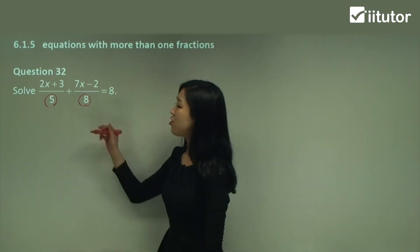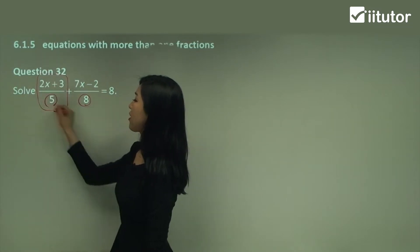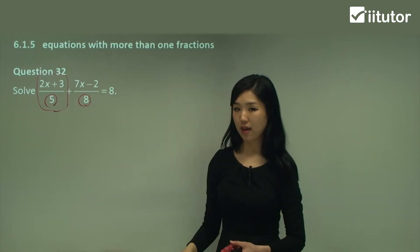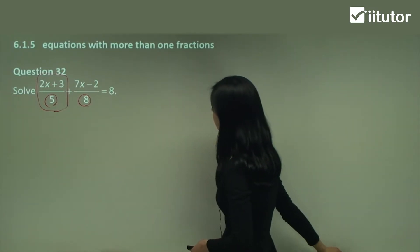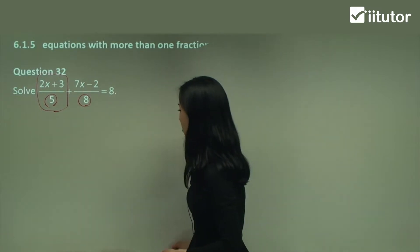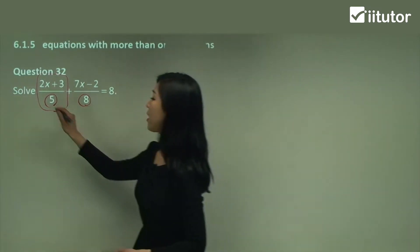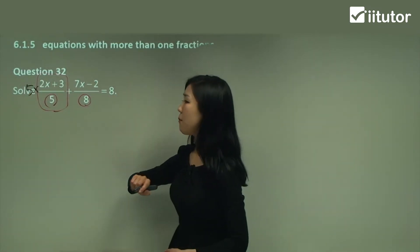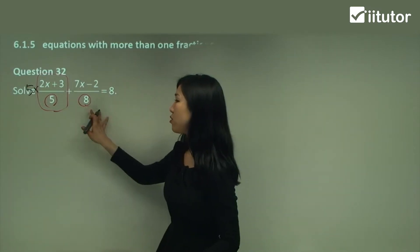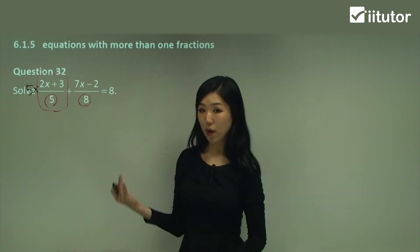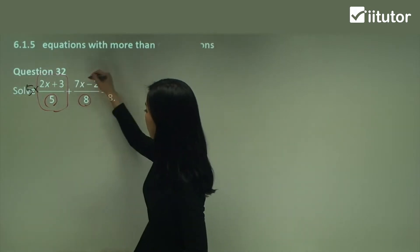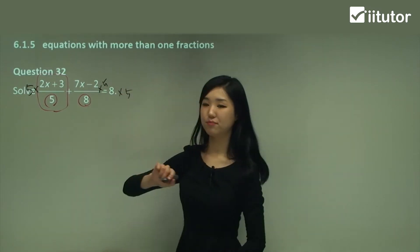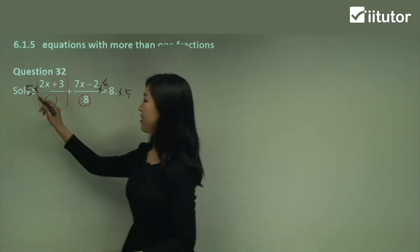Think about this — just look at this fraction. What do we need to do to eliminate the denominator there? Well, the denominator is 5, so to get rid of the 5, we can multiply by 5. But remember, if you're multiplying something to one term, you must do it to all the other terms in the equation. So I'm going to multiply this fraction by 5, and 8 by 5 as well. So I can actually eliminate that out.